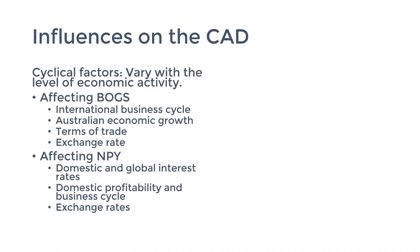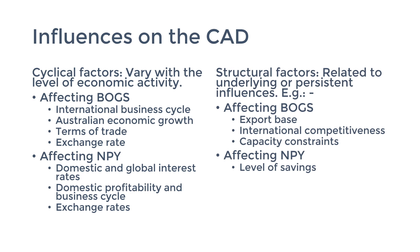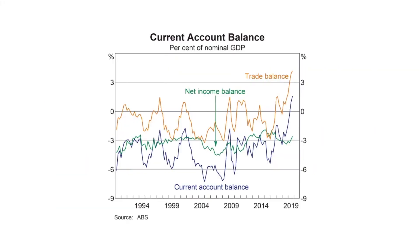Welcome to HEC Economics Made Easy. This is part 5 of a series on the balance of payments. You can find the previous instalments in the description below. Previously we learnt about the cyclical and structural influences on the BOGS and MPY accounts in the current account. We observed that the current account has a long-term trend of being in deficit. Today I want to discuss the consequences of this current account deficit.